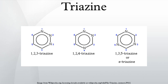Other aromatic nitrogen heterocycles include pyridines with one ring nitrogen atom, diazines with two nitrogen atoms in the ring, and tetrazines with four ring nitrogen atoms.